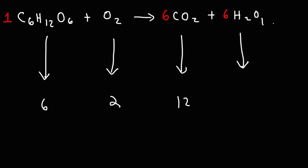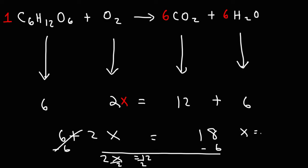For water, there's an invisible 1, so it's 6 times 1, that's 6 oxygen atoms. We need to make both sides equal. On the right side, we have a total of 18 oxygen atoms. How can we get 18 on the left side? We don't want to change this number, but we do want to put a number in front of O2. Let's put an x here. 6 plus 2 times x equals 18. If we subtract both sides by 6, we get 2x equals 12. And if we divide both sides by 2, we get x equals 6.